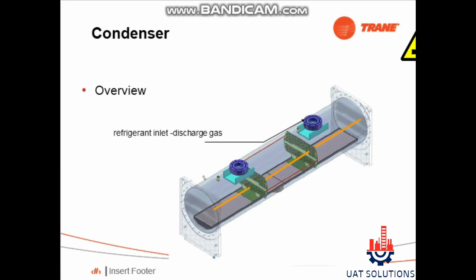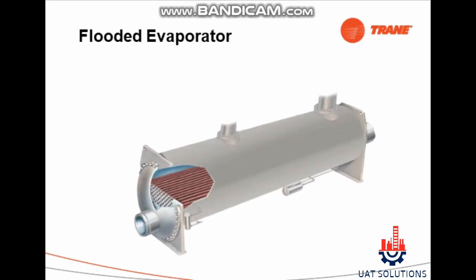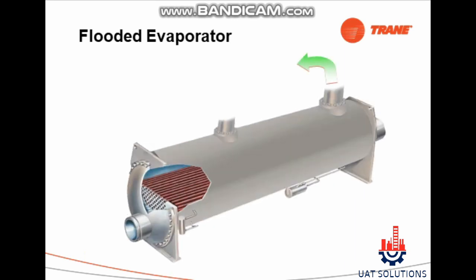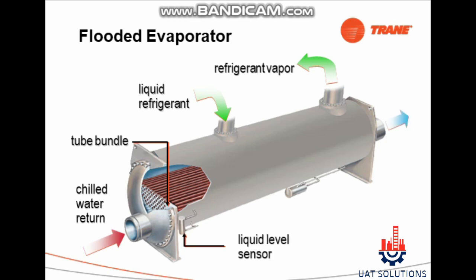Condenser overview: refrigerant inlet, inlet and outlet discharge baffle, tube bundle, liquid sub-cooled outlet, sub-cooler, refrigerant vapor, liquid refrigerant, tube bundle, chilled water return, liquid level sensor, and chilled water supply.